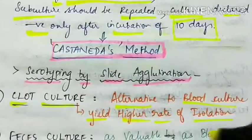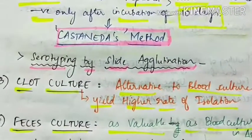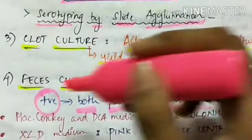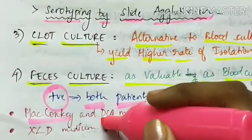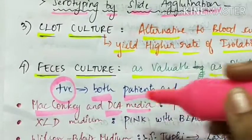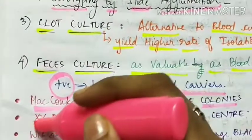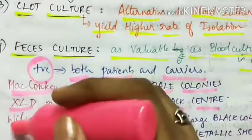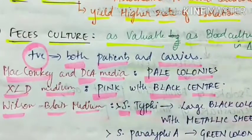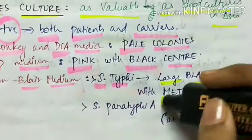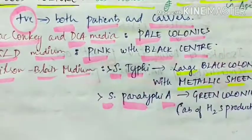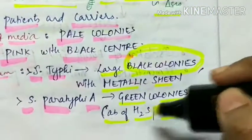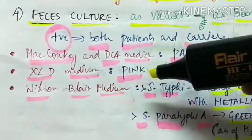Feces culture is as valuable as blood culture in diagnosis. It is positive both in patients and carriers, since carriers also shed bacilli in feces. On MacConkey and DCA (deoxycholate citrate agar) media, there are pale-colored colonies. On XLD (xylose lysine deoxycholate) medium, there are pink-colored colonies with a black center. On Wilson-Blair medium, Salmonella typhi produces large black-colored colonies with metallic sheen due to H2S production, while Salmonella paratyphi A produces green-colored colonies due to absence of H2S production.